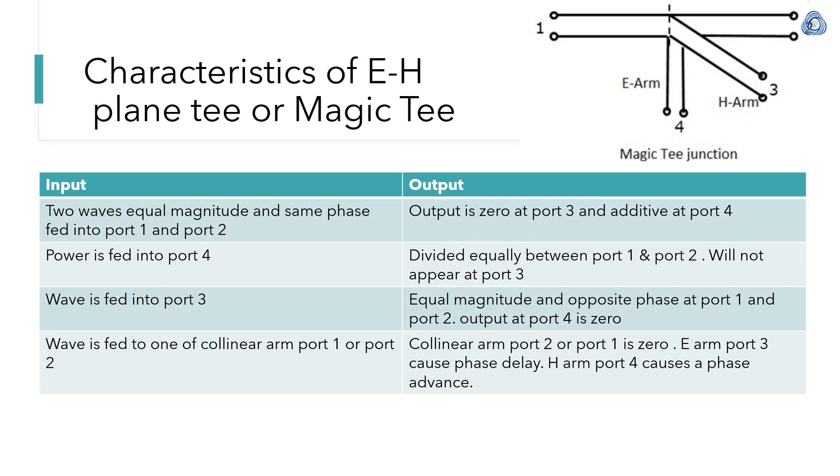Now we want to study the characteristics of EH plane T or magic T. Imagine that two equal magnitude and same phase waves feed into port 1 and port 2. At that time, E arm output is 0 and H arm output is additive. This is a property of H plane T.